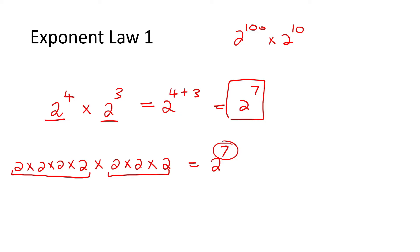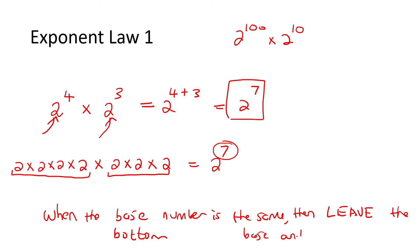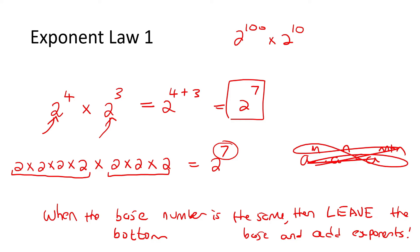So what is the rule here? When the base — the base is the bottom number, B for bottom, base — when the base, the bottom number, is the same, then leave the base and add the exponents. I know in class your teacher might be doing something like A to the M times A to the N equals A to the M plus N. We can rather teach this in a different way. Hope that makes sense what we've done so far.